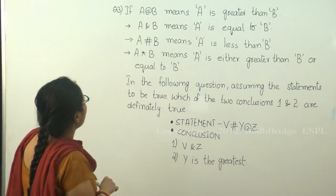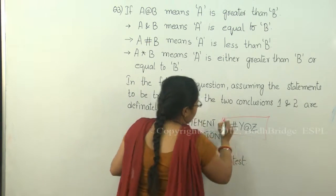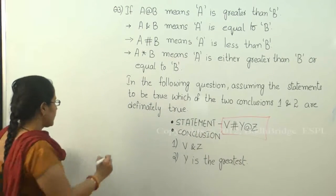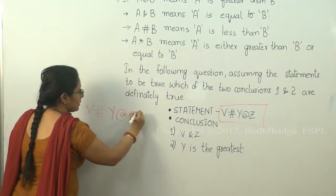So now let's solve it. The question which is given is this one. So now we will solve this. It's V hash Y at the rate Z.